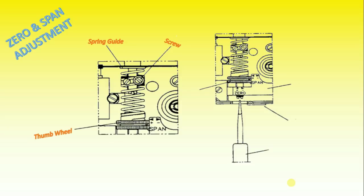Always check zero after adjusting span. Zero is adjusted by turning the silver lower thumb wheel located on the lower arm, or externally with a screwdriver through the zero adjustment opening. Remember to install the cover to ensure the unit's sealing.